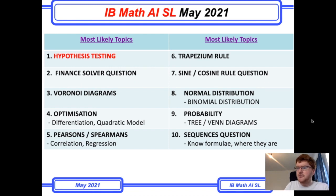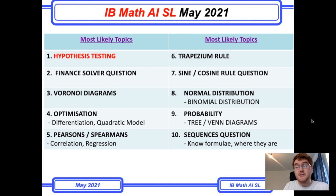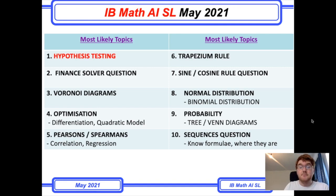Normal distribution and binomial distribution are important — this involves knowing your calculator well, knowing how to use CDF and PDF, when to use which one, and also working with inverse norm. Make sure you know how to use normal distribution as I think a question will appear on it.